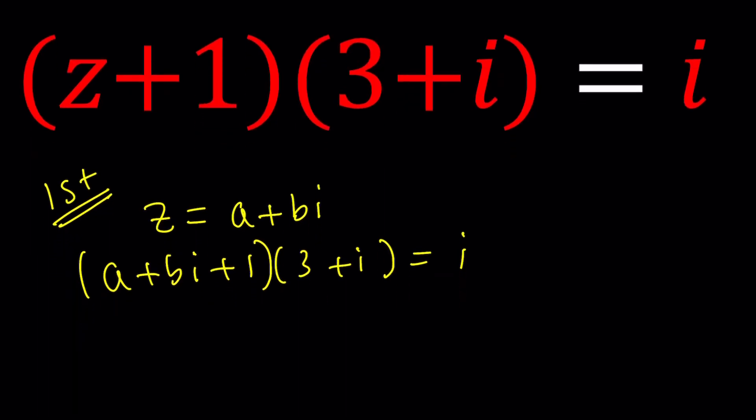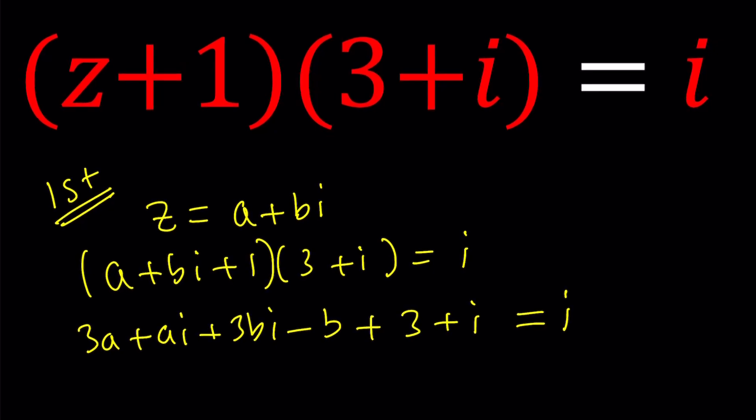and then we're going to go ahead and distribute everything and get a nice equation. Well, it's not going to be that nice, but you'll see. Let's distribute: 3A plus AI and then 3BI plus BI squared. Remember that is negative B, and then we're going to distribute the 1: plus 3 plus I equals I. So we have this equation, and we're going to go ahead and put together the real parts and the imaginary parts.